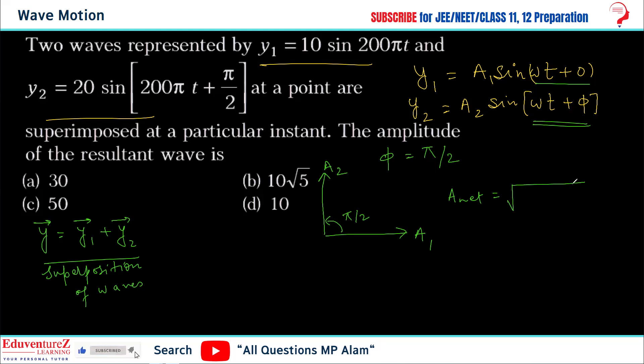That means to find net amplitude, we will apply the resultant vector formula here: root of a1 squared plus a2 squared, where a1's value is 10, so 10 squared plus a2's 20 squared. If it was 60 degrees or 30 degrees, we would add 2a1a2 cos θ, but this is 90 degrees, so cos 90 makes that term zero.